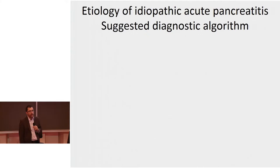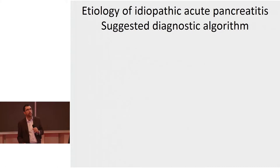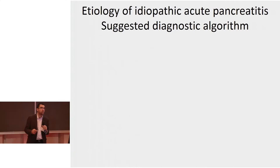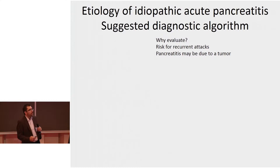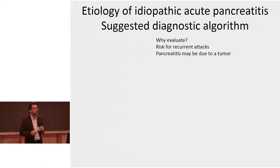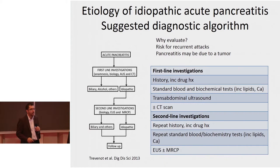When you look at population-based studies on acute pancreatitis, you can see that up to 30% — almost one third of patients with a first episode of acute pancreatitis — are labelled as idiopathic. That is to say we do not know what the cause is. We should evaluate these patients because they may get a recurrent episode, which means a high risk of developing chronic pancreatitis, but also because they may actually have a pancreatic tumour as the cause of their acute pancreatitis.